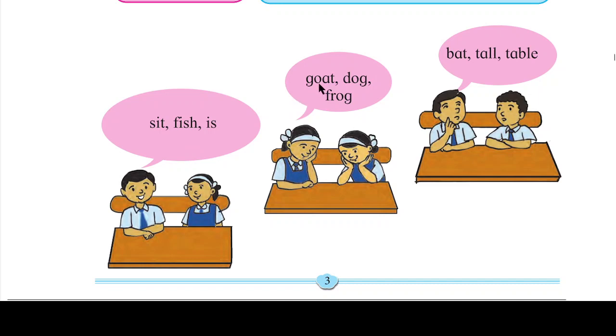G-O-A-T goat. D-O-G dog. F-R-O-G frog. So these two children have made these words. Next. B-A-T bat. T-A-L-L tall. T-A-B-L-E table.